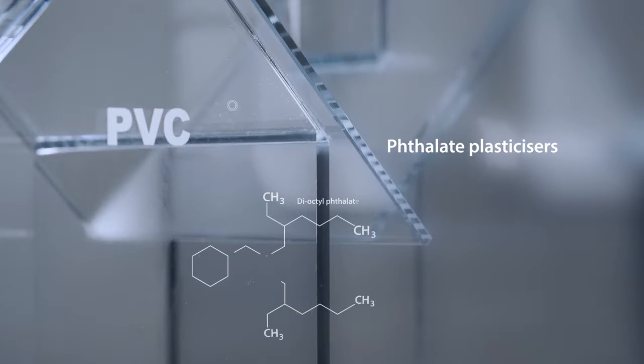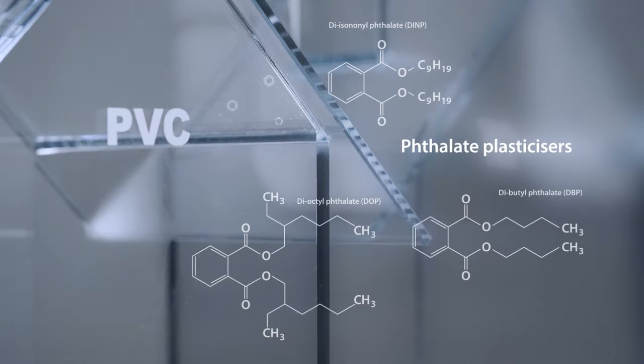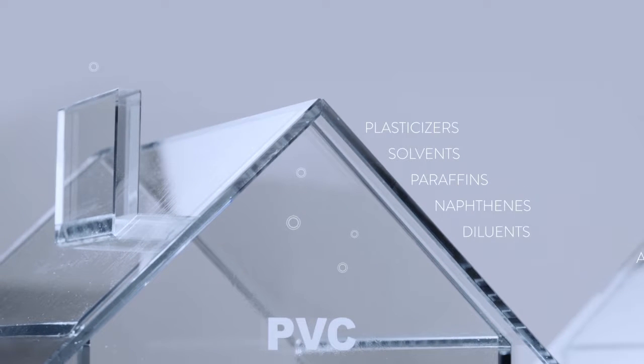Phthalate plasticizers are also found in PVC wallpapers. Phthalate is linked to many diseases and its use is prohibited or strongly regulated in most products. Here together with other potentially harmful components, it is released into the air.